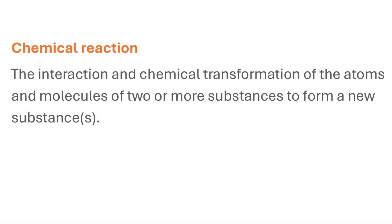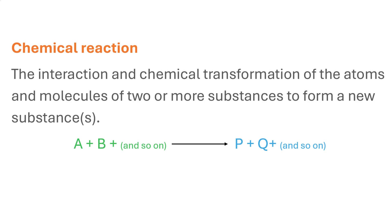A chemical reaction can be defined simply as the interaction and chemical transformation of the atoms and molecules of usually two or more substances to form a new substance or substances. The substances that take part in a chemical reaction are known as the reactants, while the new substances formed after a chemical reaction has occurred are known as the products.